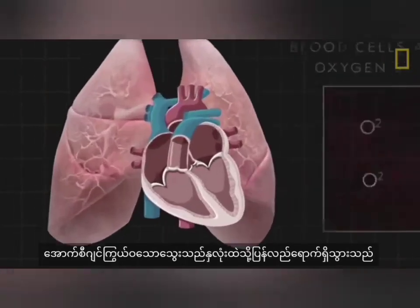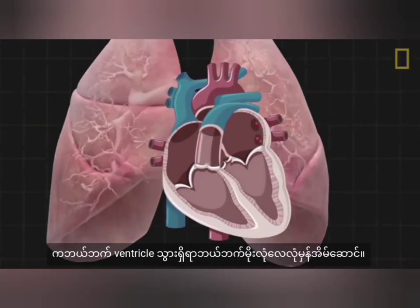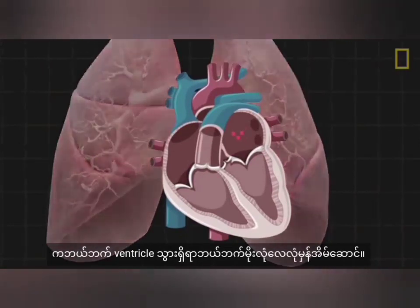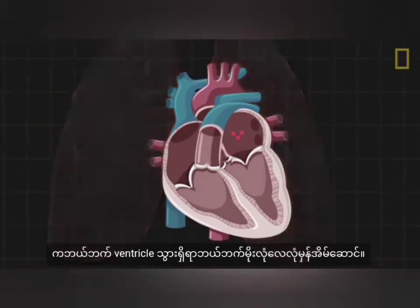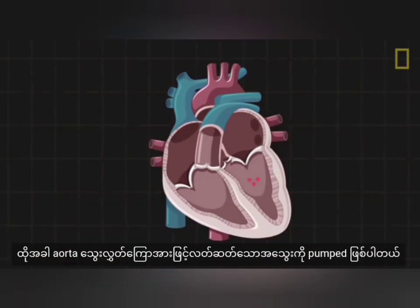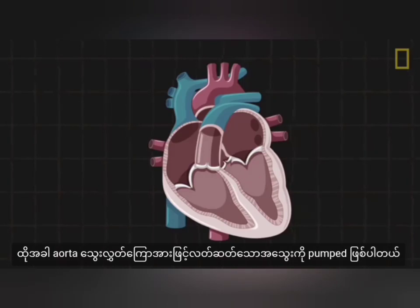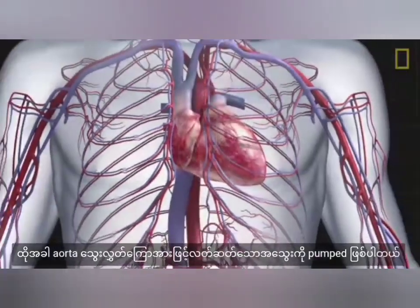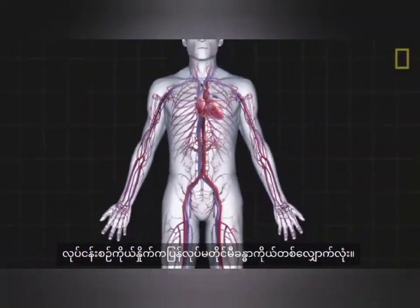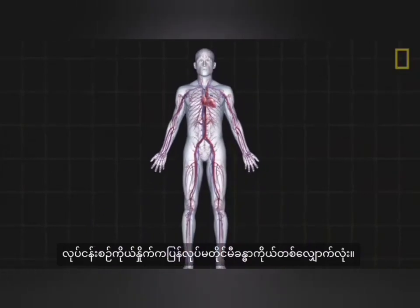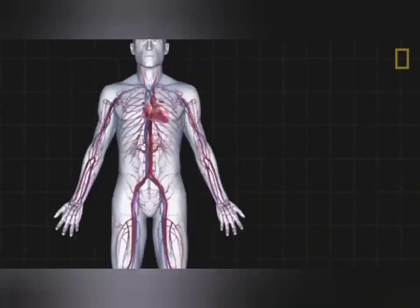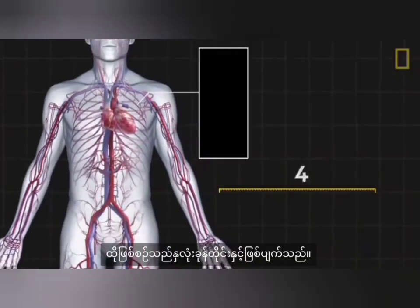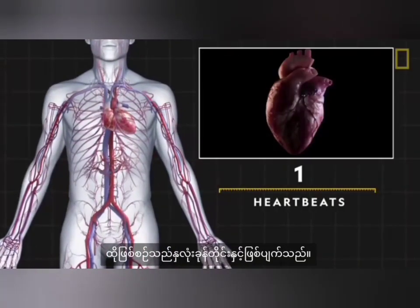The oxygen-rich blood returns to the heart through the left atrium, where it goes to the left ventricle. Then, by way of the aorta artery, the fresh blood is pumped throughout the body before the process repeats itself.